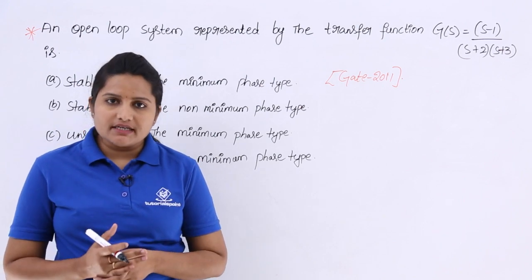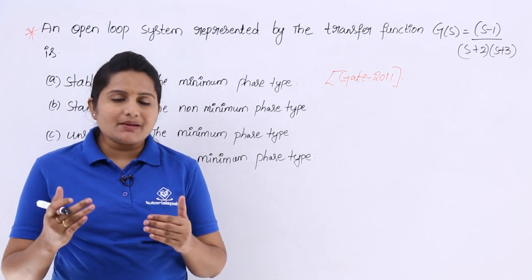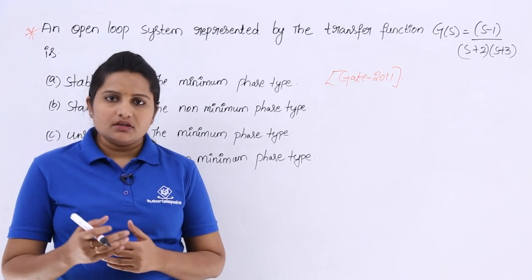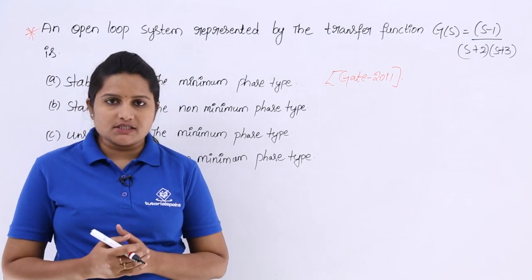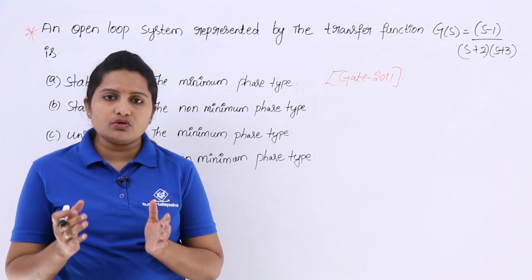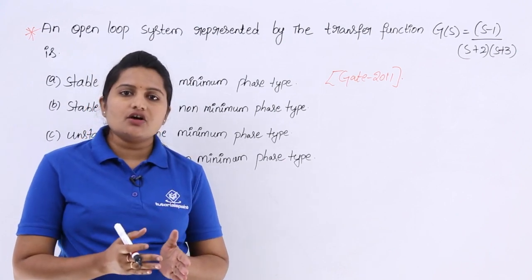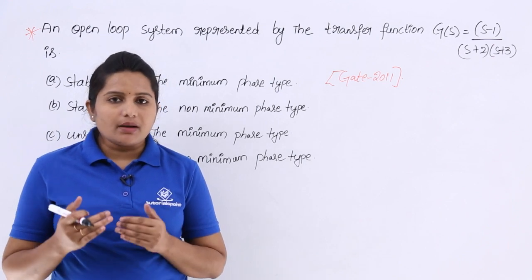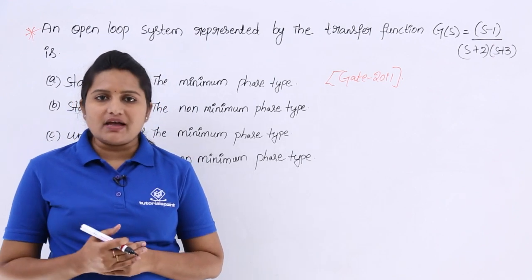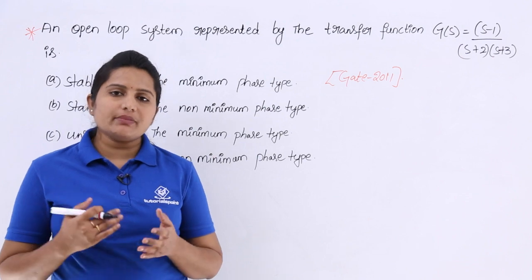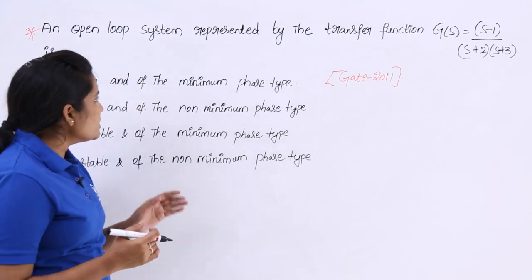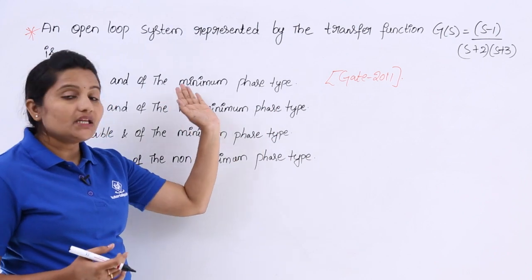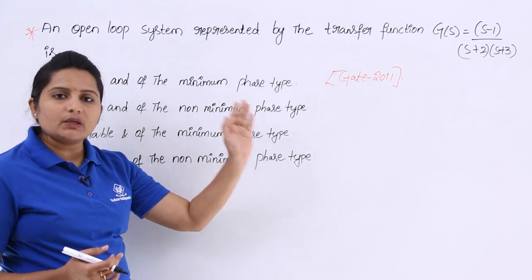Keeping this in mind, the stability of a system depends upon the position of poles, not on zeros. Only the location of poles will decide the stability of the system. Coming to minimum phase system — what is a minimum phase system? We have minimum phase type and non-minimum phase type.